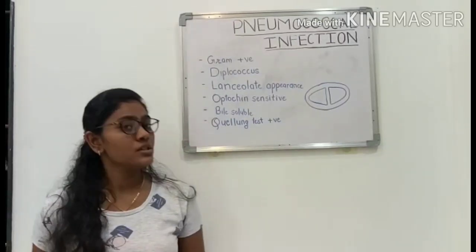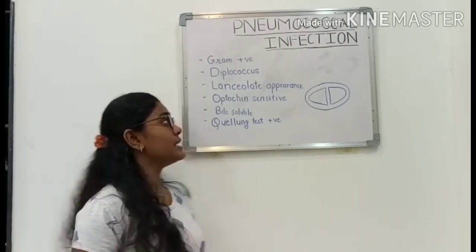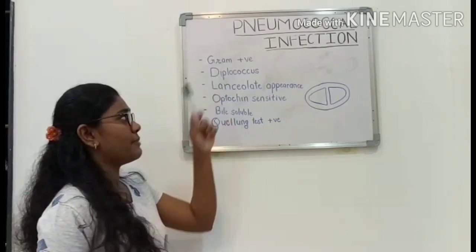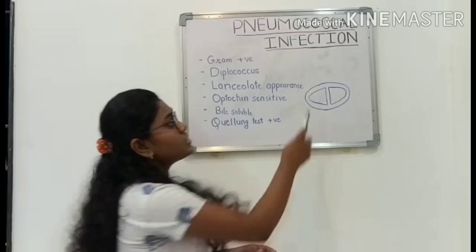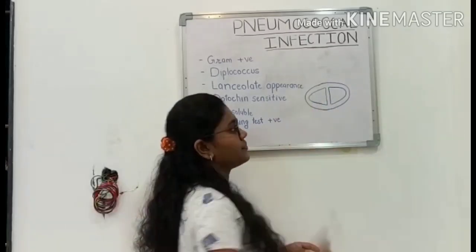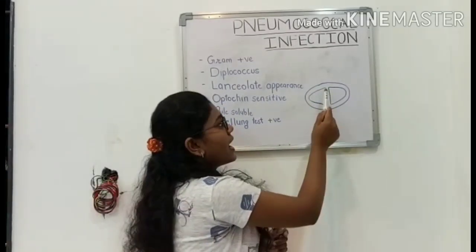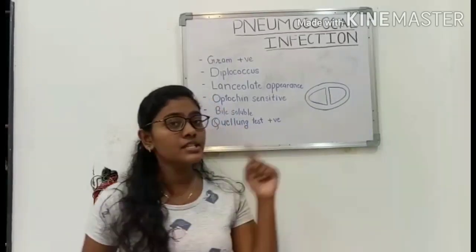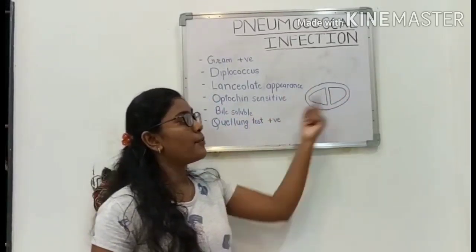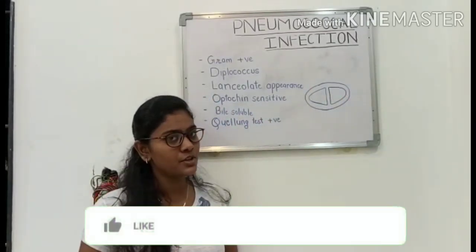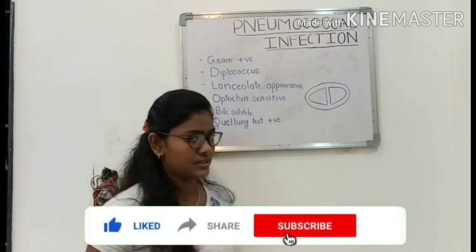Pneumococcus is also called Streptococcus pneumoniae. It is a gram-positive bacteria and it is a diplococcus, which means it has two cocci. One surface of the cocci is flat and the other is pointy, and these cocci face opposite to each other. This arrangement of the bacteria is called the lancet appearance.